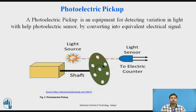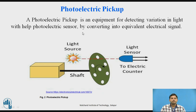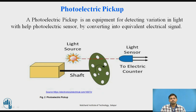Next is the photoelectric pickup. The name itself tells us: 'photo' means light, and 'electric' means voltage and current. The photoelectric pickup is a type of setup that converts light into equivalent electricity. This setup is used for the photoelectric pickup, and when a shaft is rotating, it is used for measuring speed.